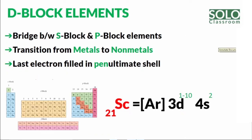Let's talk in a little more detail about D Block elements. The left side is the S Block element and the right side is the P Block element — it's a transition from metal to non-metal. The first element is scandium, with atomic number 21. Its electronic configuration is AR-3D-1-4S-2. The outermost subshell is 4S and the penultimate subshell is 3D.